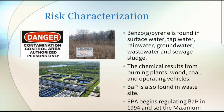This chemical results from burning plants, wood, coal, and from operating vehicles. The major indoor sources of BAP in the air are wood-burning fireplaces, stoves, and tobacco smoking. EPA began regulating Benzo-A-Pyrene in 1994 and set the maximum contamination level in drinking water.